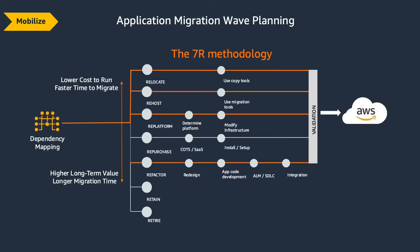Now let me introduce the 7R methodology. This is built on top of the 5Rs that Gartner coined back in 2011. The idea is we take all the information discovered in the initial phase, run from the dependency mapping, and then choose different routes for different applications. Not every application moving out of a data center will follow the same path — each depends on the application, its complexity, and the business need.